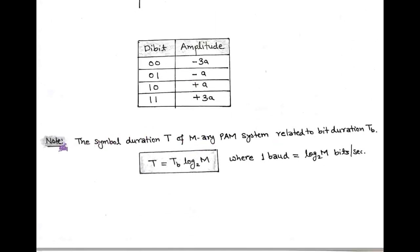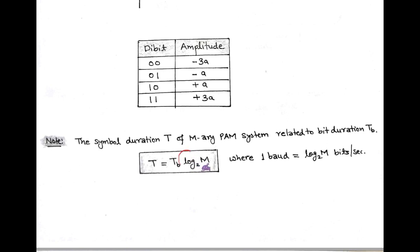In M-ary encoding, the symbol duration T is related to the bit duration Tb by the relation T = Tb · log₂(M). Here, log₂(M) is expressed in bits per symbol.